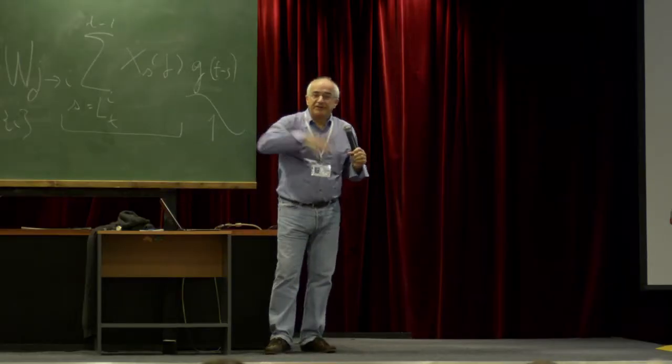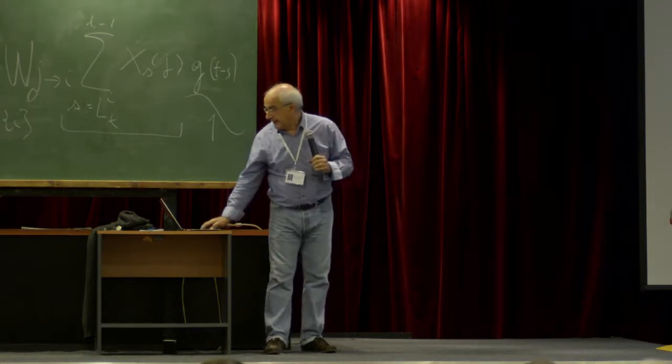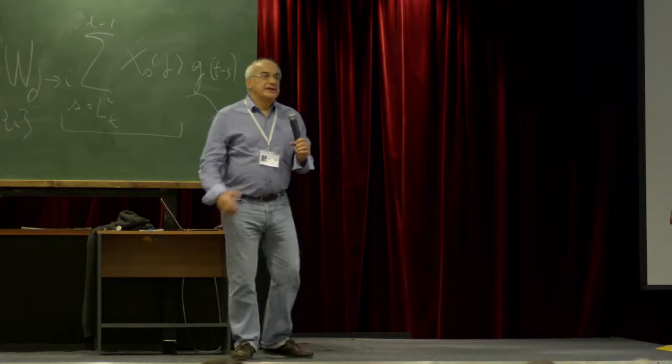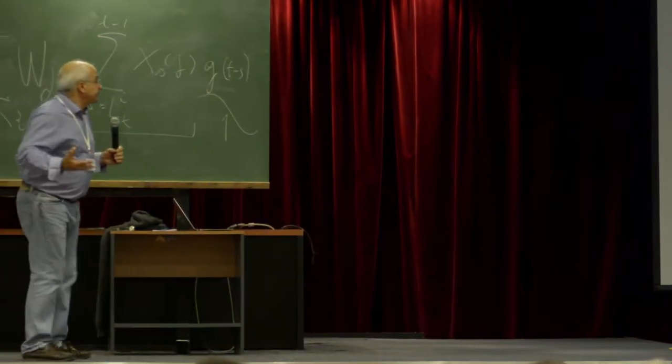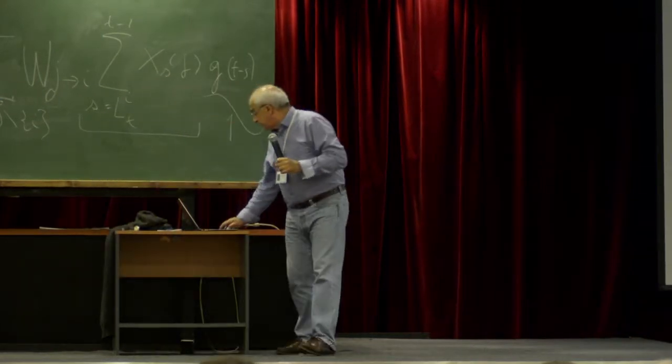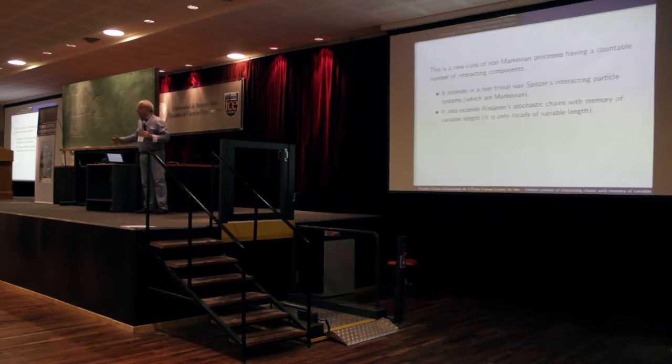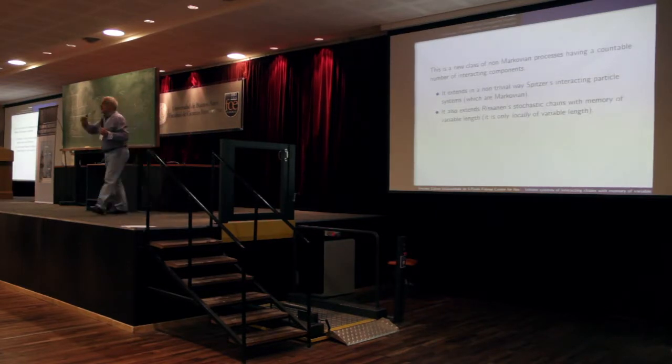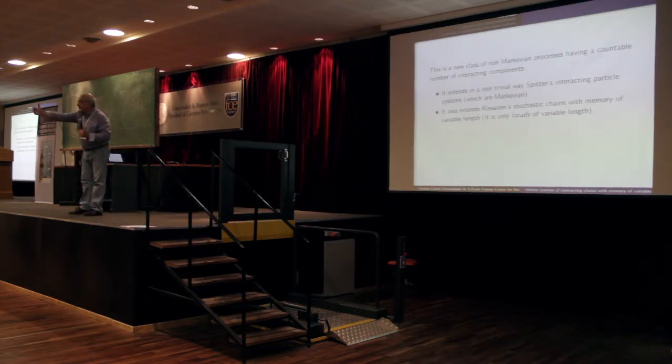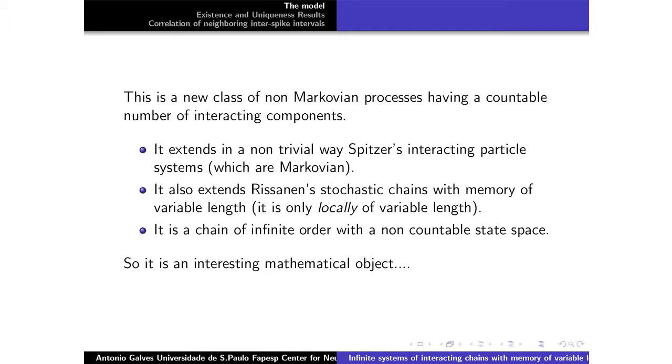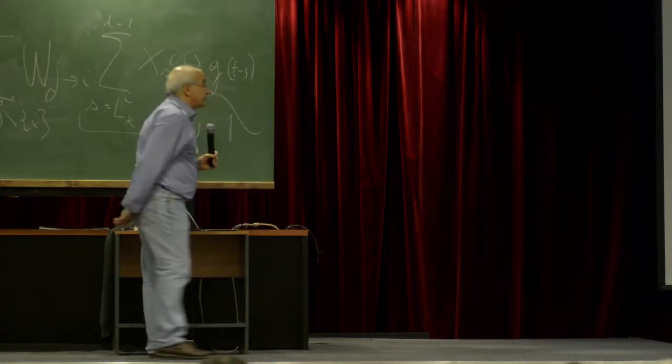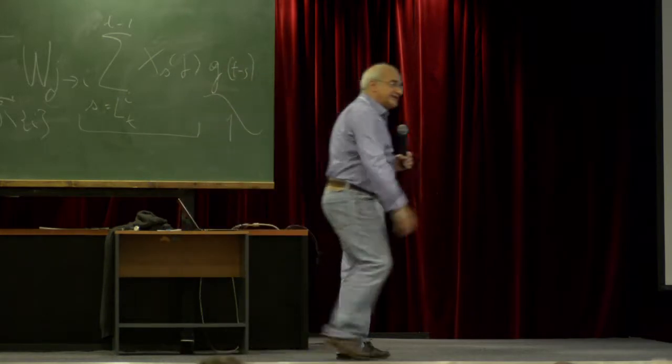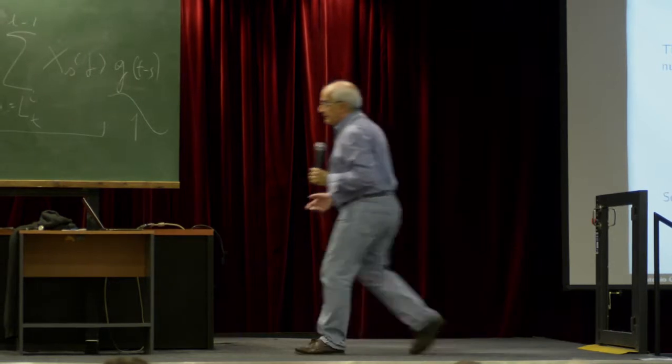So it extends in a non-trivial way the class of wonderful models Spitzer introduced 40 years ago, more or less. 41 years ago, I guess. Because the Spitzer model is a Markov process, this is not Markov. And it also extends the class of stochastic chains with memory of variable length introduced by Jean-Marie Samy. And it's more general because these models are only locally of variable length. So you have all the interactions, which means that you must be obliged to go back to minus infinity to decide about the next step.